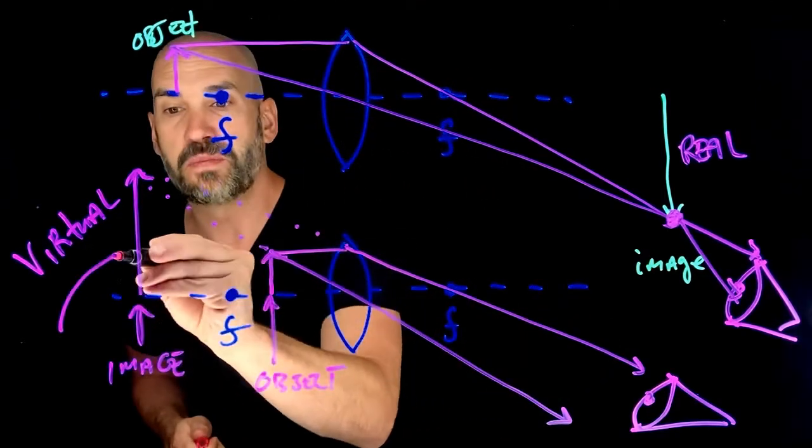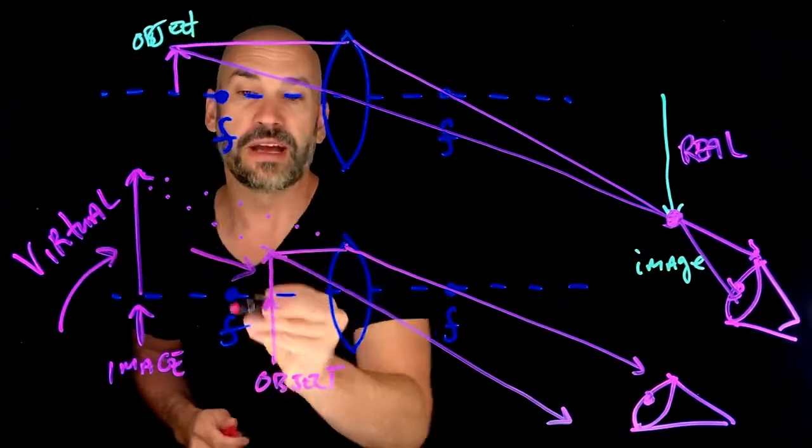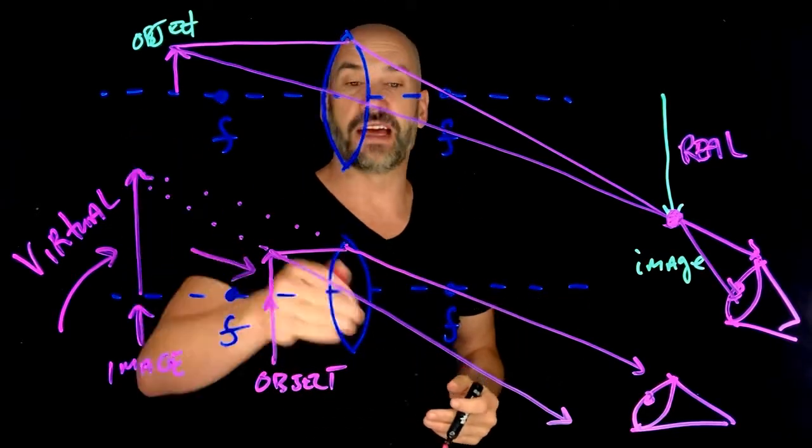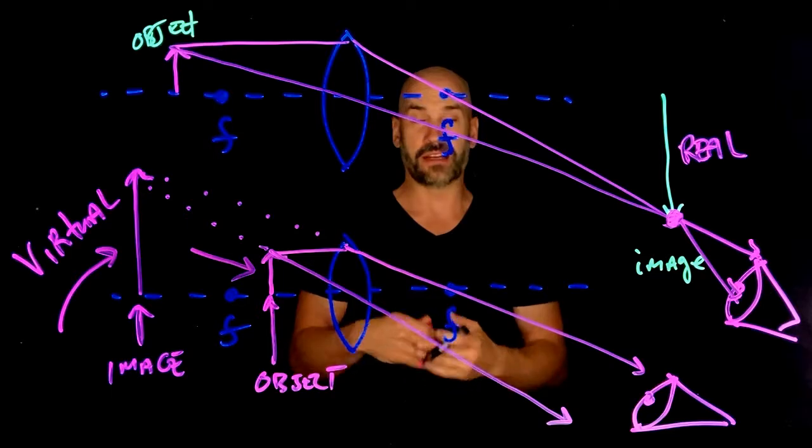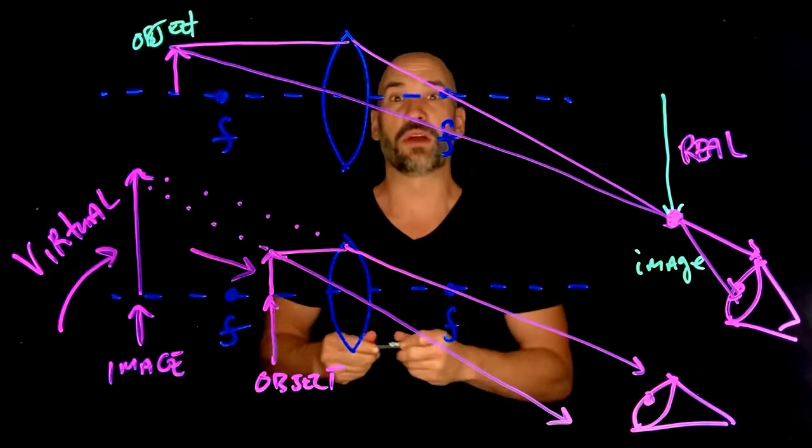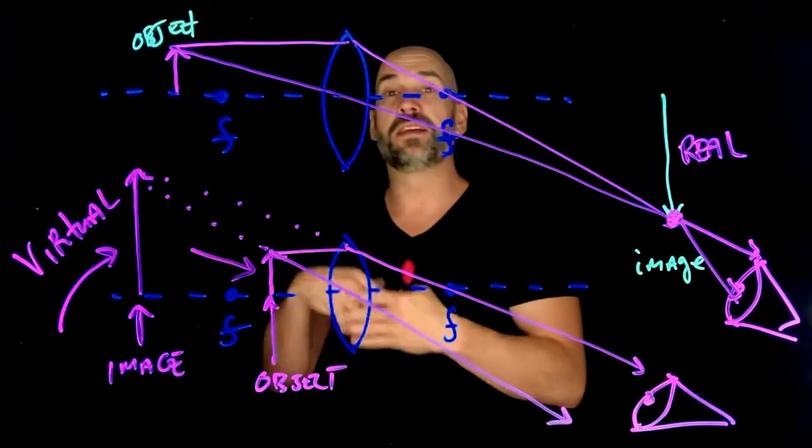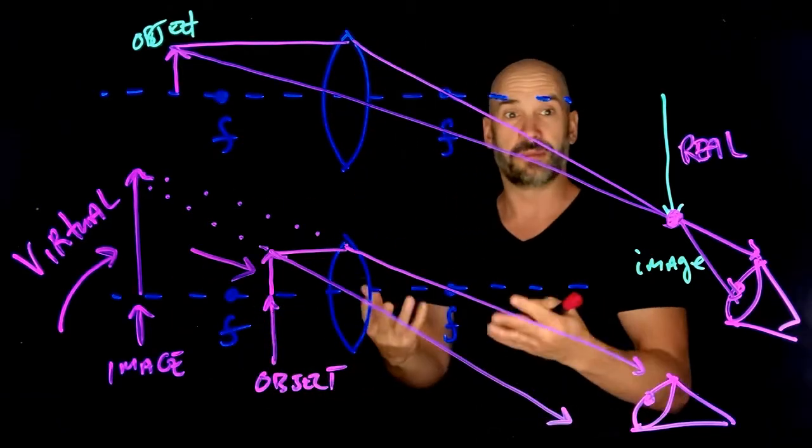Notice this one is much bigger than this one. Hence the magnification. So this virtual image has been magnified. That is why a magnifying glass works. You create a virtual image that appears larger than the original image.